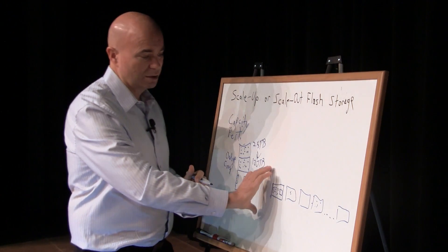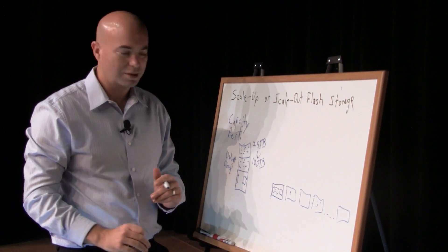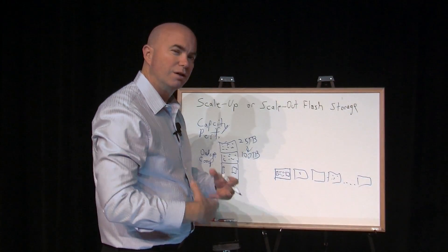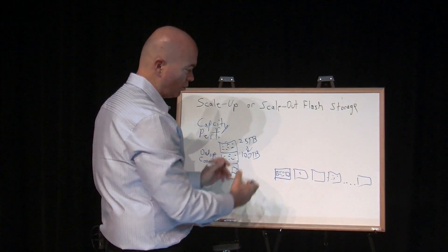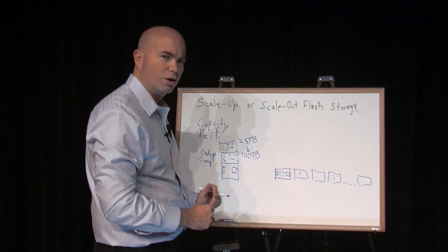So as you start to look at this scale-up versus scale-out strategy, what you run into is, I probably am not going to need the performance of additional systems. And in good chance, I'm probably not going to need the capacity of additional systems. But what's the downside of doing that?